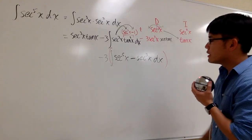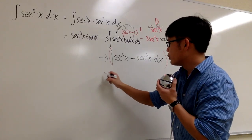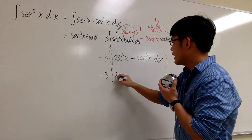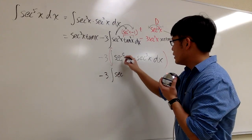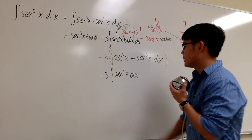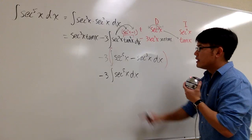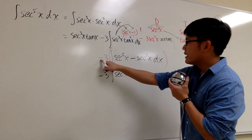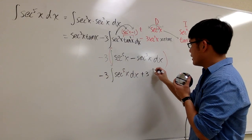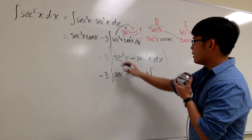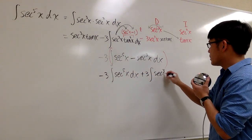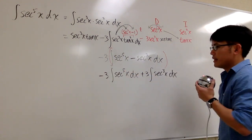This is like saying we have negative 3 times this integral, and we break it into two pieces. The first piece is negative 3 times the integral of secant to the fifth power x dx. The second piece is negative 3 times negative, which is plus 3 times the integral of secant to the third power x dx.